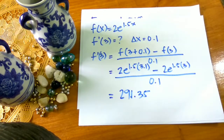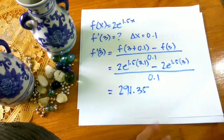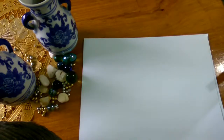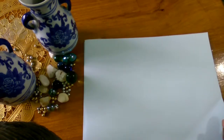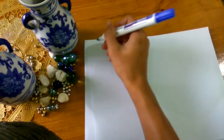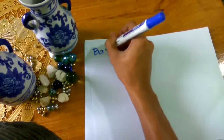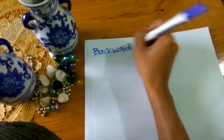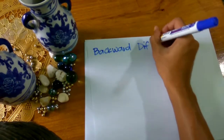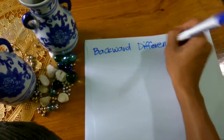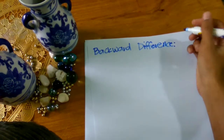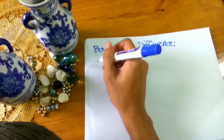So this is the example for the forward difference. Since we have found the approximate derivative of our function using the forward difference, now we will use the backward difference. So ang backward difference ay may formula na...